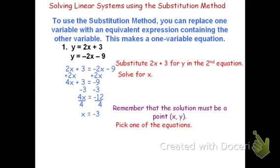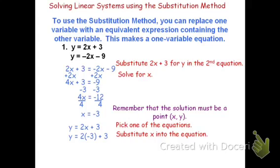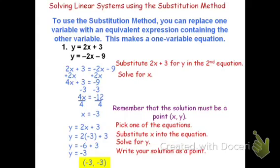If it were up to me, I'd pick the top equation because it's all positive — less chance of making an error. So given y equals 2x plus 3, if I substitute x equals negative 3, I get y equals 2 times negative 3 plus 3. 2 times negative 3 is negative 6, and negative 6 plus 3 is negative 3. I now know that y equals negative 3. As noted in the reminders, the solution must be a coordinate, so we write the solution as the point negative 3, negative 3.